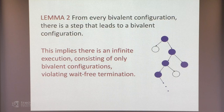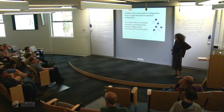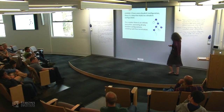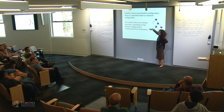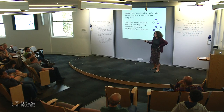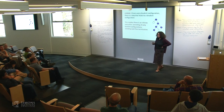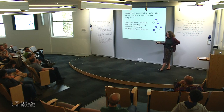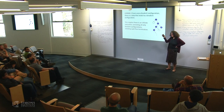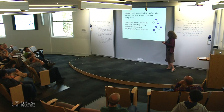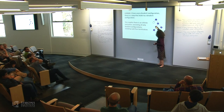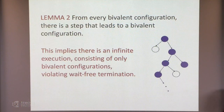A student asks why there are options. From a configuration, the adversarial scheduler chooses which process takes the next step. Since we're trying to construct a bad execution, the adversarial scheduler schedules this process then that one, and so on. Distributed computing is nice because we have this strong adversary that lets us do all sorts of things — every lower bound prover is happy.